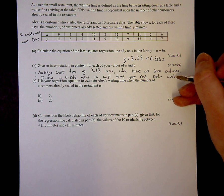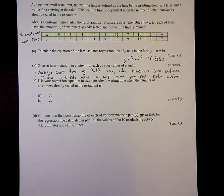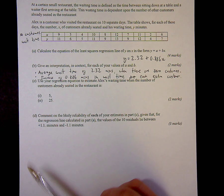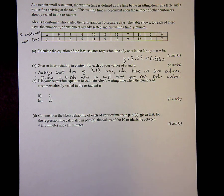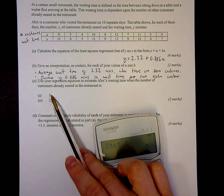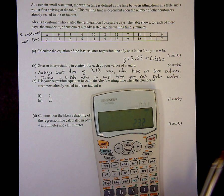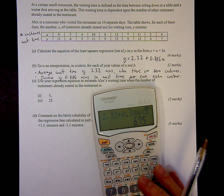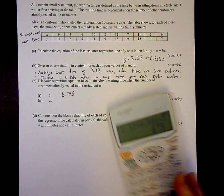It says use your regression equation to estimate waiting time for these two here, so all you've got to do is very straightforward, the two marks is just plug these values in. For the first one, x is 5 because this is 5 customers already seated, which is x. So it's going to be 2.32 plus 0.886 times 5, which equals 6.75. And simply for the next one, 2.32 plus 0.886 times 25, which is 20.5 essentially.